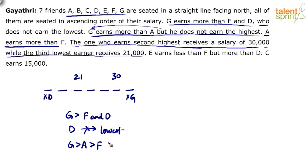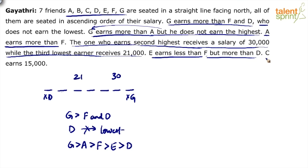E earns less than F, so F is greater than E. But E earns more than D, so E is more than D. C earns 15,000. Since they are arranged in ascending order and the third position earns 21,000, C will either come in the first or the second position, because 15,000 is less than 21,000.